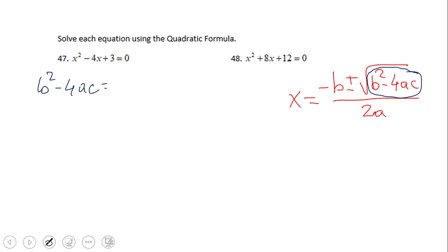So in this case we're gonna get negative 4 squared, that is what b is, minus 4 times 1 times 3. So in this case we get 16 minus 12 which is 4. That means we have two real solutions.